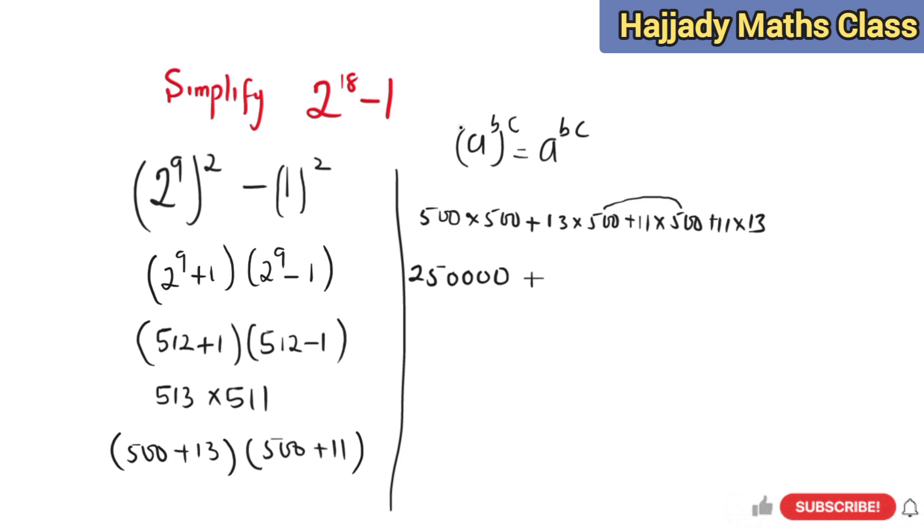Plus 11 times 13, that can easily be done, and that is going to give us 143, because 11 times 11 is 121, and adding 22 to 121 is going to give us 143.